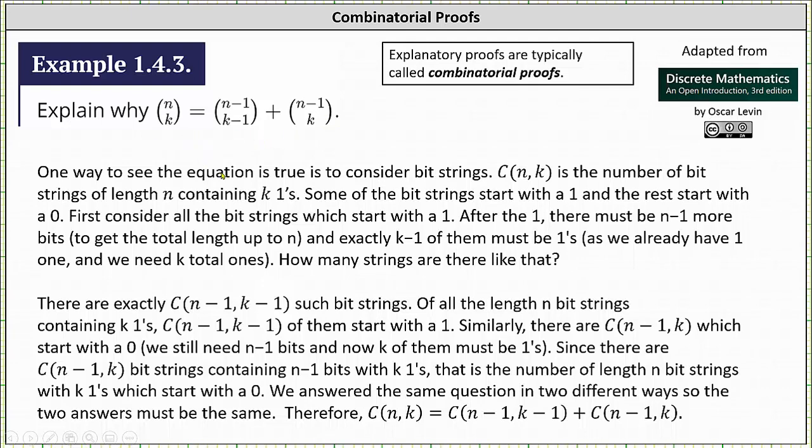One way to see the equation is true is to consider bit strings. N choose K is the number of bit strings of length N containing K ones. Some of the bit strings start with a one and the rest start with a zero.